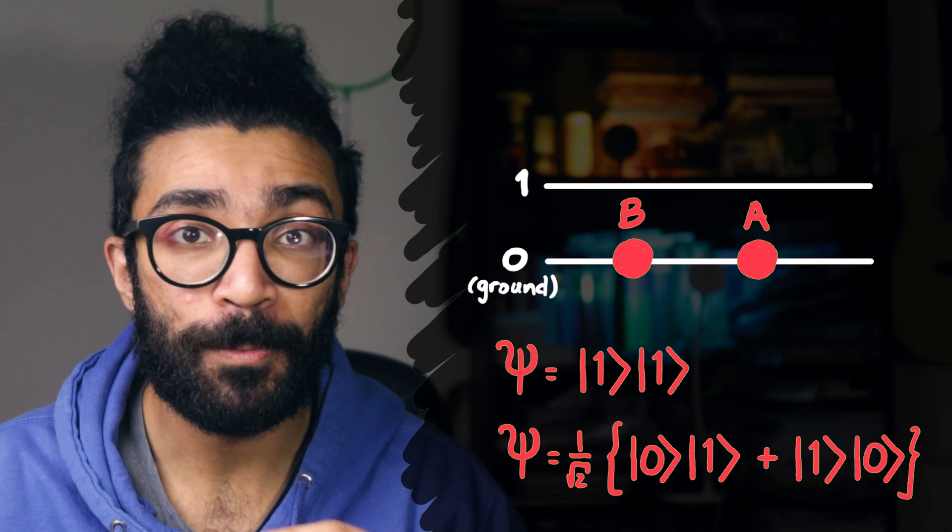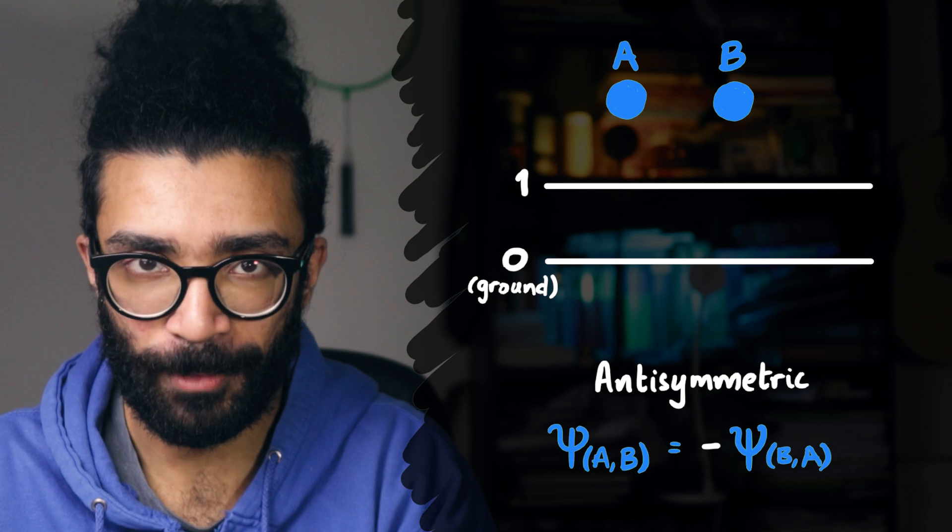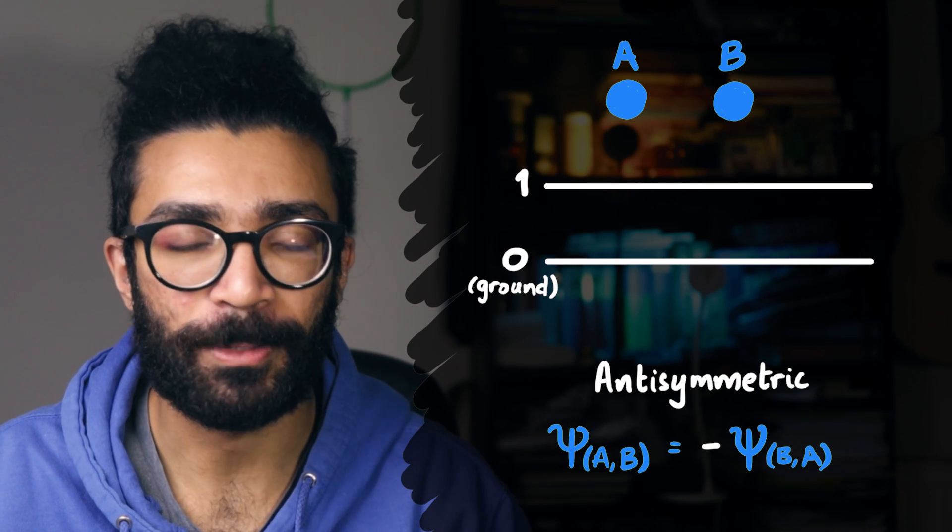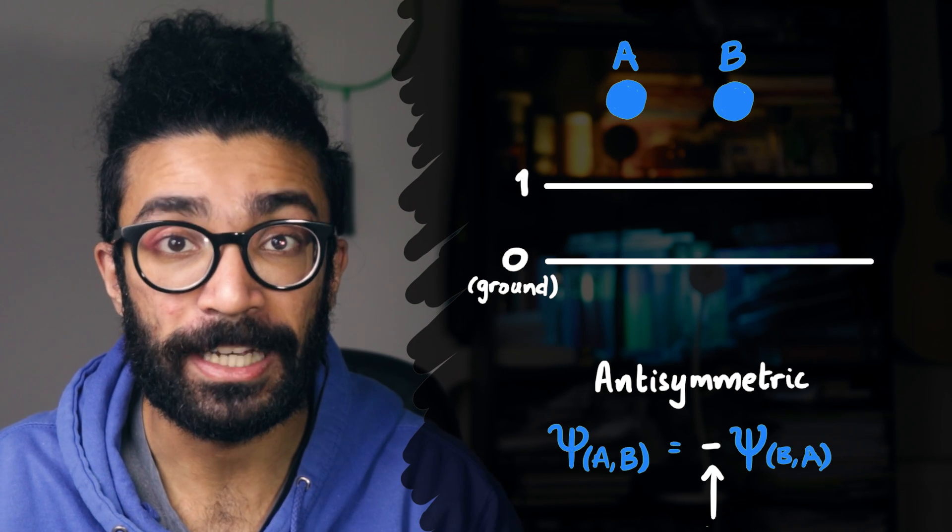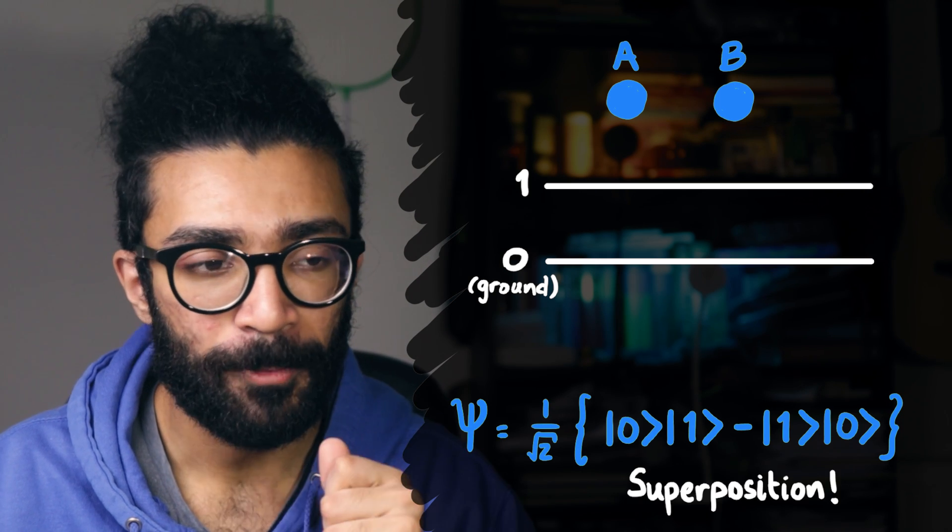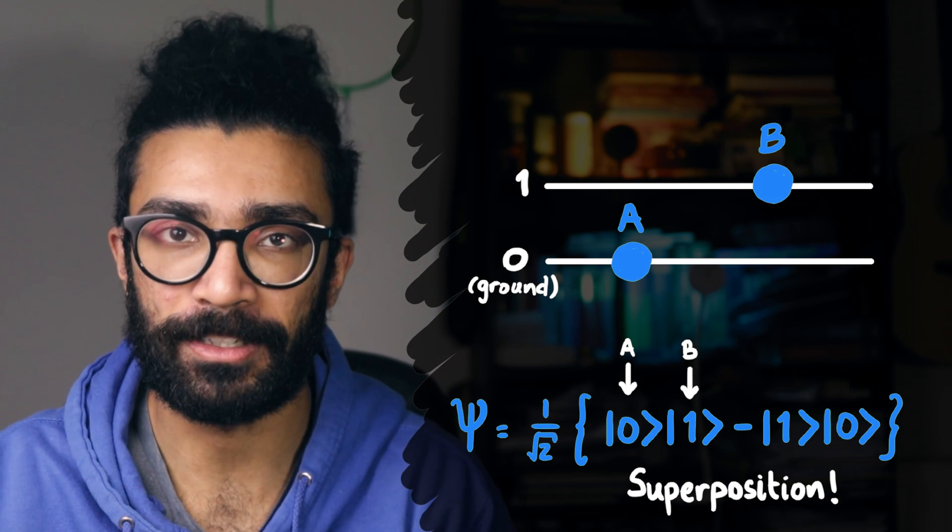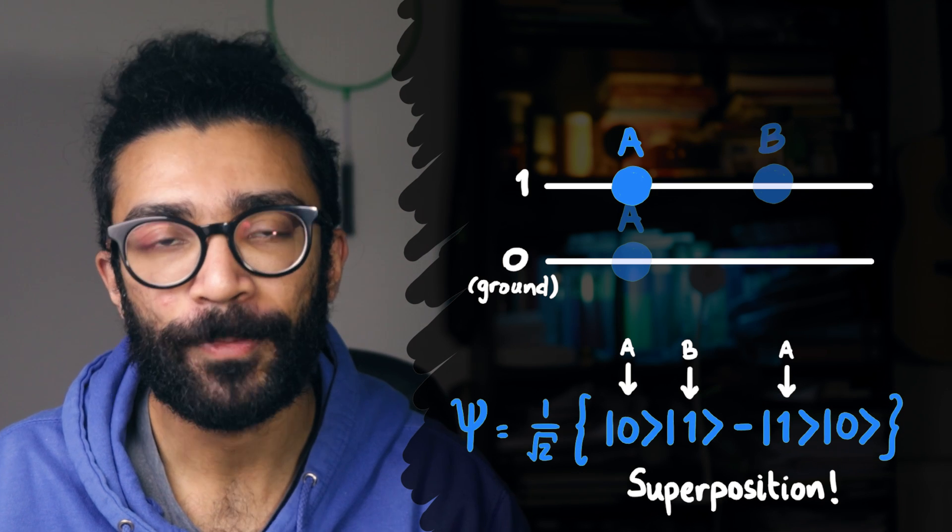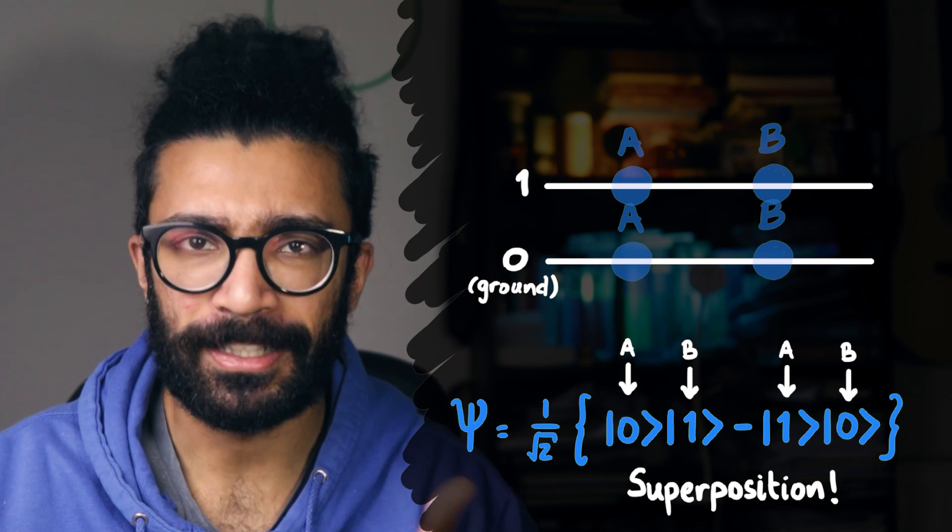Instead, let's consider what would happen if our two particles were fermions, not bosons, if their wave functions had to be anti-symmetric. Remember the condition here is that when we swap the particles, the wave function must become negative of what it used to be. And for this particular kind of system, that wave function ends up looking like this. What we've got represented here is a superposition between the state where particle A is in the energy level 0, and particle B is in the energy level 1. And the other state, which is when particle A is in energy level 1, and particle B is in energy level 0.